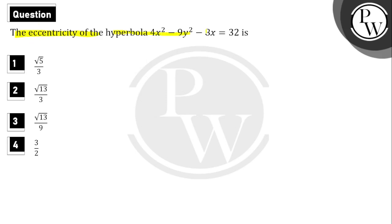The question is: find the eccentricity of the hyperbola 4x² - 9y² - 8x = 32. Four options are given. We need to find the eccentricity of this hyperbola equation.